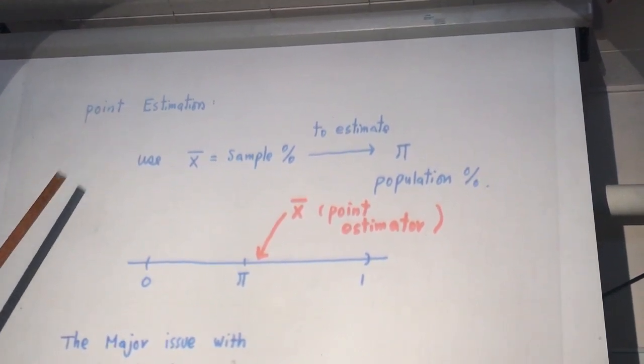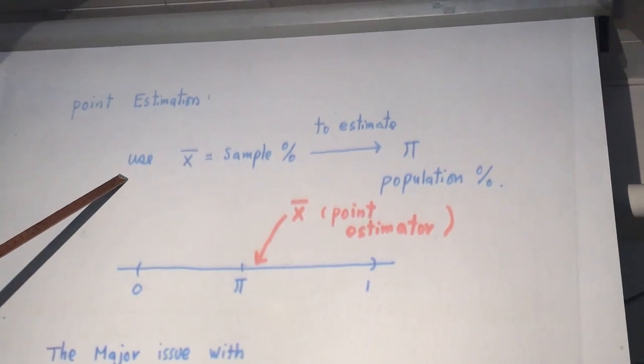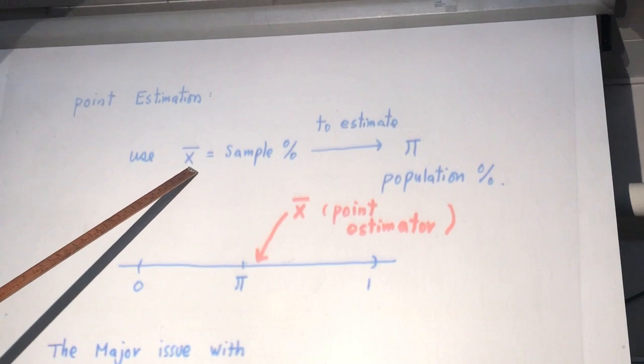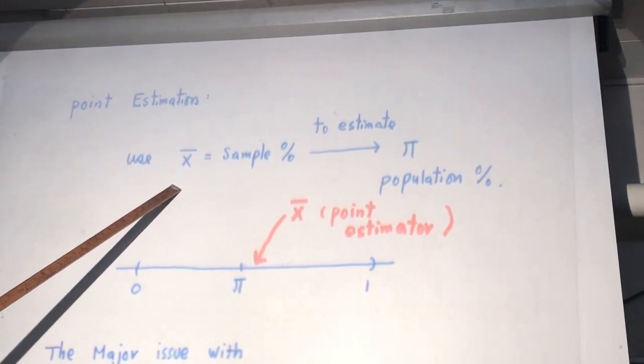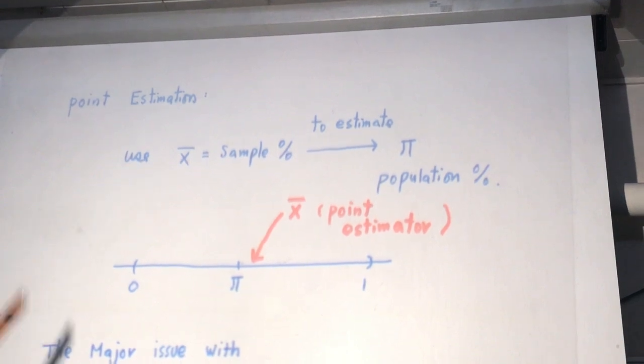Next one, introduce you point estimation. In point estimation, remember we try to use x bar. It's x1 plus all the way up to xn divided by n. And will xk follow what? Bernoulli. Or you say the process follow a count box.